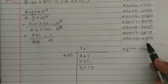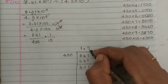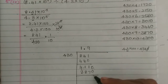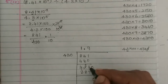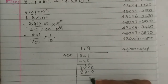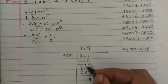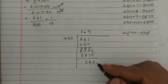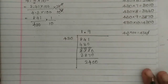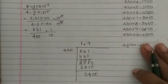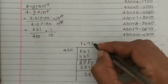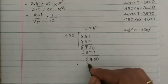9 times 430 is 3870. We try 10 times which is 4300 — too big, so we use 9. 0 minus 0 is 0, then 11 minus 7 is 4, 10 minus 8 is 2, 3 minus 3 is 0 — so remainder is 240. Bring down 0 to get 2400. 5 times 430 is 2150.